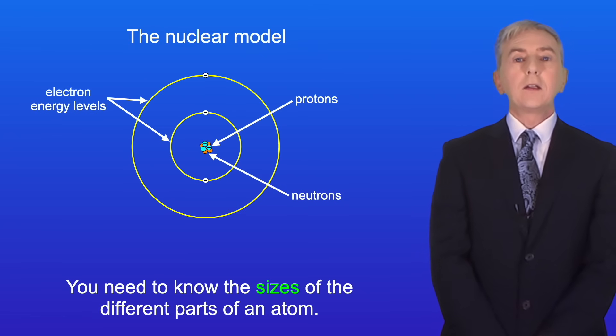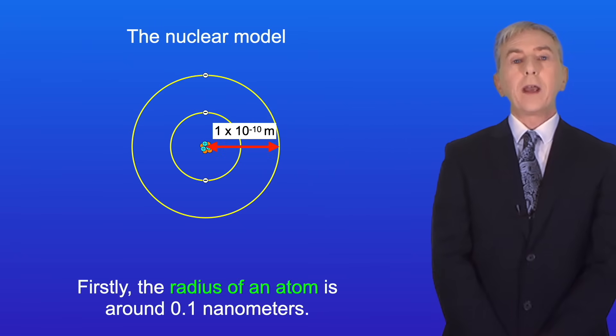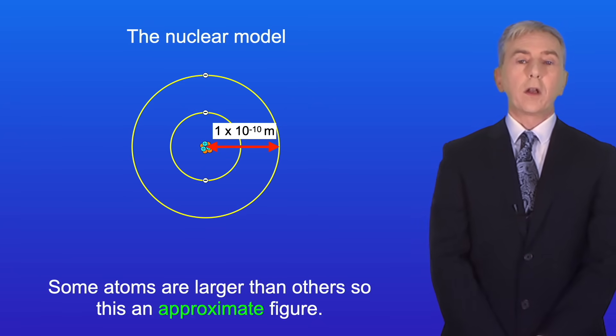Now you need to know the sizes of the different parts of an atom. So let's look at those now. Firstly the radius of an atom is around 0.1 nanometers. This is also written as 1 times 10 to the power of minus 10 meters. Now some atoms are larger than others so this is an approximate figure.